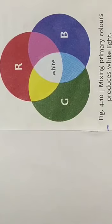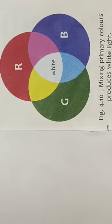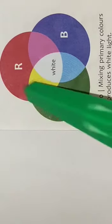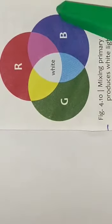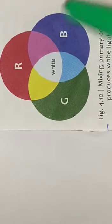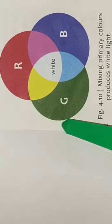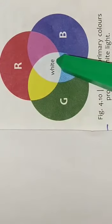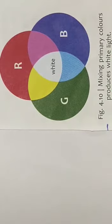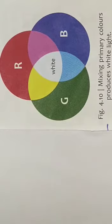When the lights of three colors — red, green, and blue — are mixed, it produces white light. Red, green, and blue are the primary colors. These three colors are called primary colors since they cannot be made by mixing other colors.